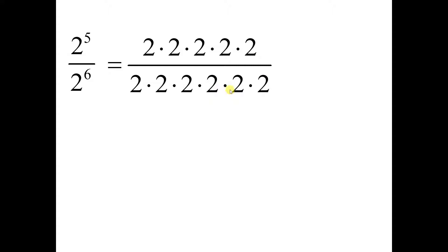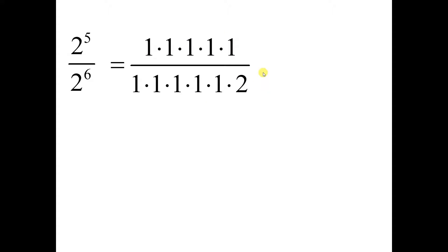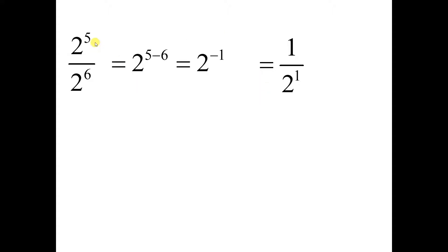Now let's take a look at what happens if we end up with a negative exponent — like 2 to the 5th divided by 2 to the 6th. So this would be 5 twos in the numerator and 6 in the denominator. They would all reduce except for 1 in the denominator, so you would have 1 over 2 to the power of 1. That would be 2 to the 5 minus 6. It's the numerator's exponent minus the denominator's exponent, so 5 minus 6 is negative 1. So 2 to the negative 1 is 1 over 2. When you have a negative exponent, it's a reciprocal. Negative means opposite — the opposite of repeated multiplication, which is what exponents are, is repeated division.